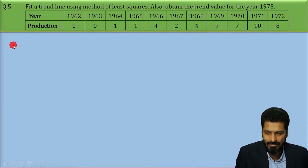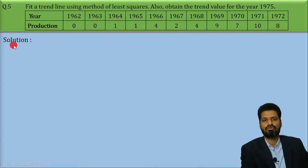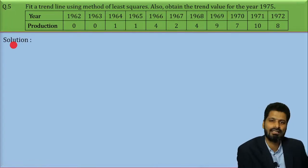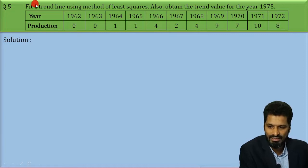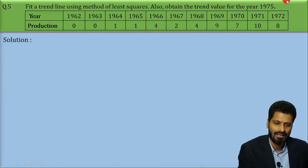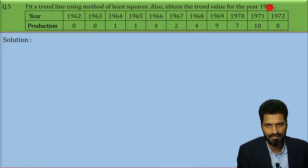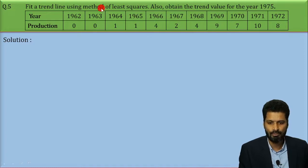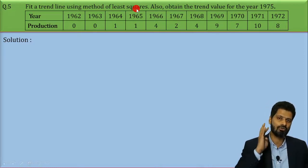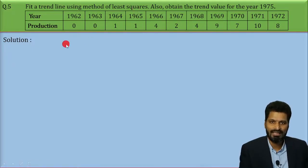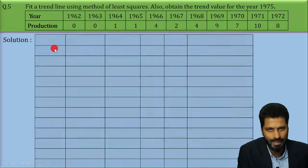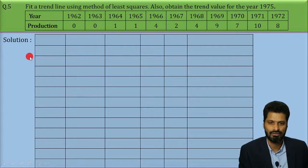Without wasting any time, let's quickly begin with the solution. In this case, we have to fit a trend line using the method of least squares, and for year 1975 we need to find the production value. Whenever you use the least square method, you simply need to follow four steps. In the very first step, you have to tabulate the data. So let's tabulate.